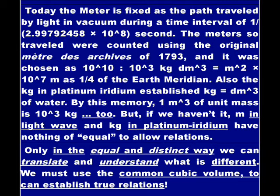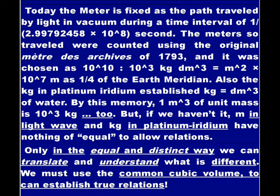Today, the meter is fixed as the path traveled by light in vacuum during the time interval. The meters so traveled were counted using the original meter, and it was chosen in relation to the Earth meridian as three-quarters of it. Also, the kilogram in platinum-iridium established the kilogram as one decimeter cube of water. By this, one meter cube of unit mass is ten cube of kilogram.